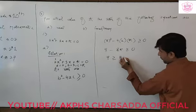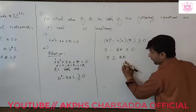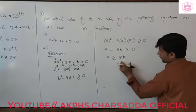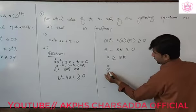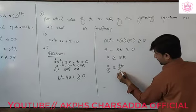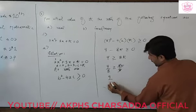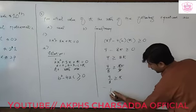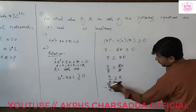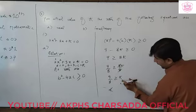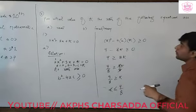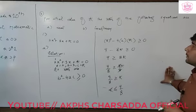This minus 8k, we shift it to the right hand side of the inequality, so it becomes plus 8k. Now to find k, we divide both sides by 8, giving us 9 by 8 is greater than or equal to k.